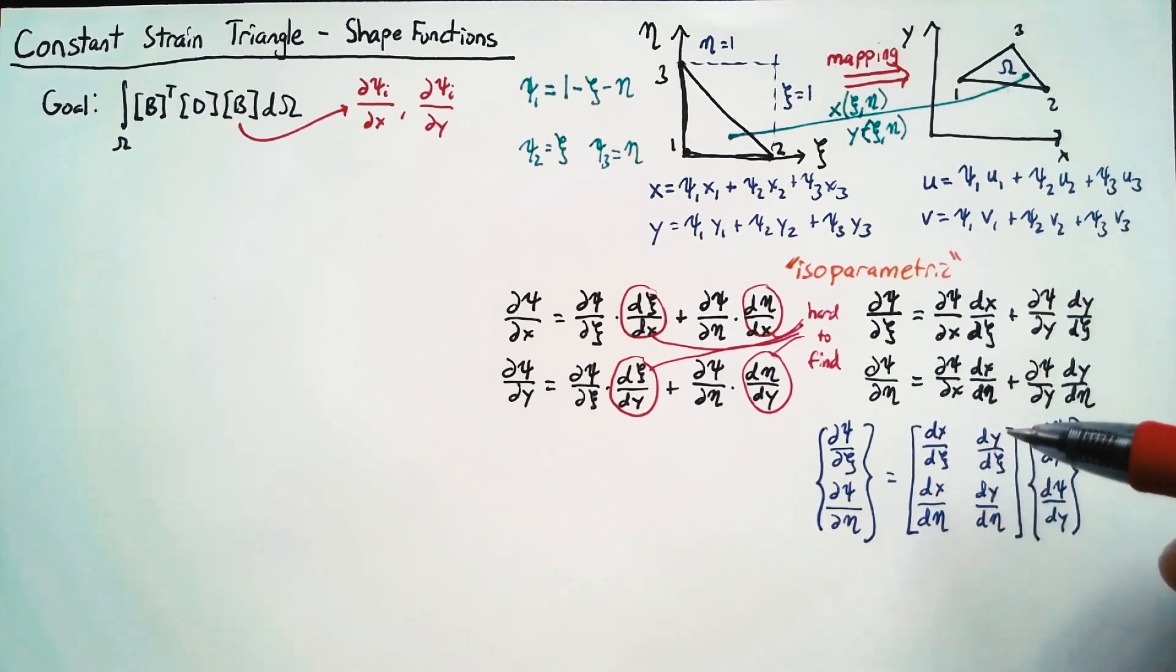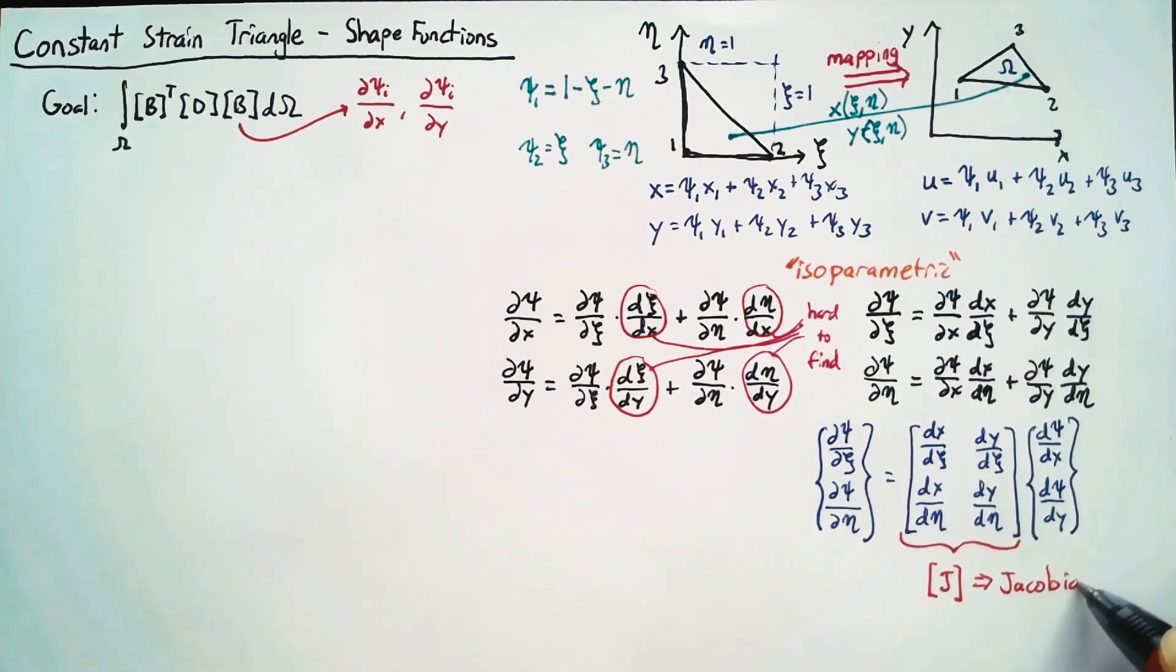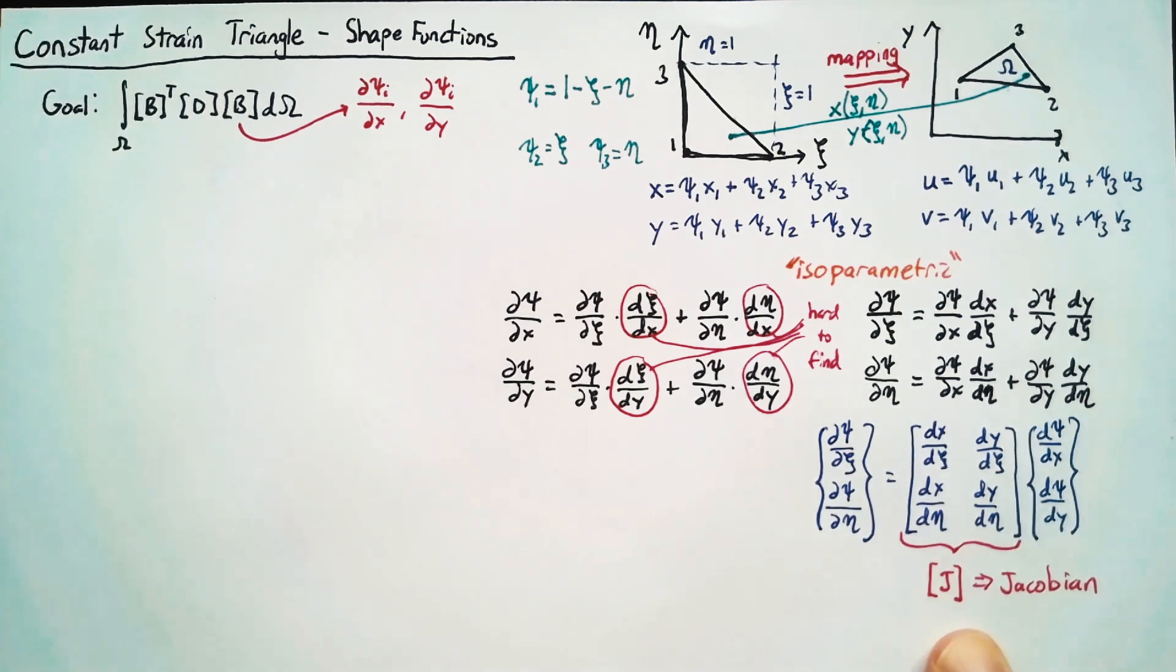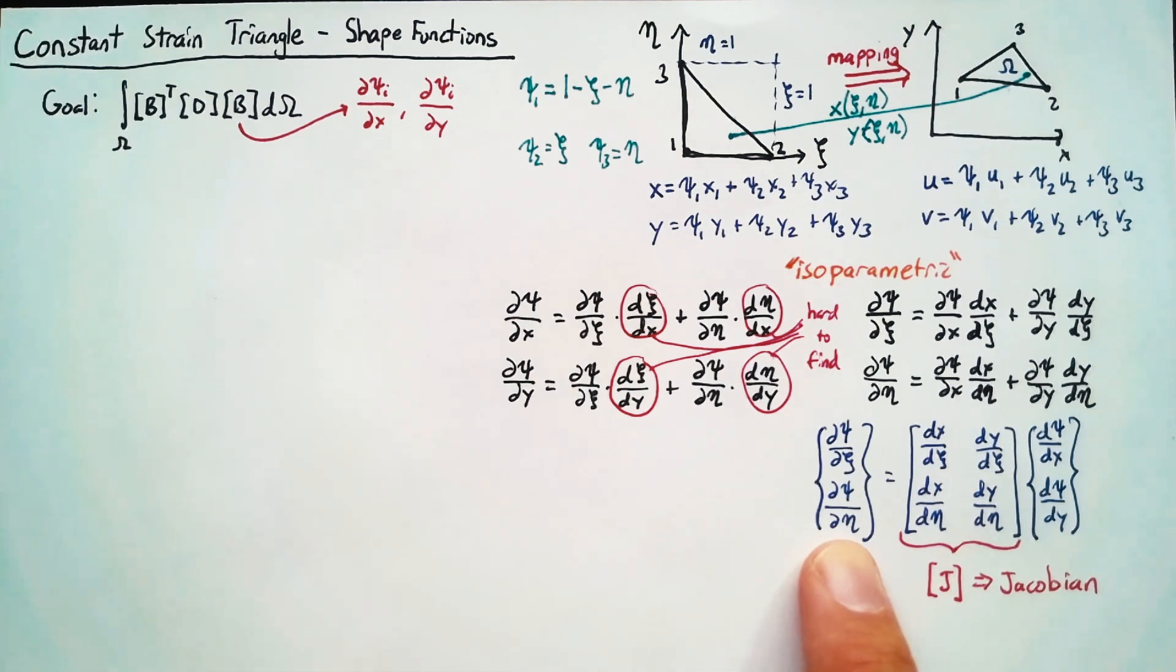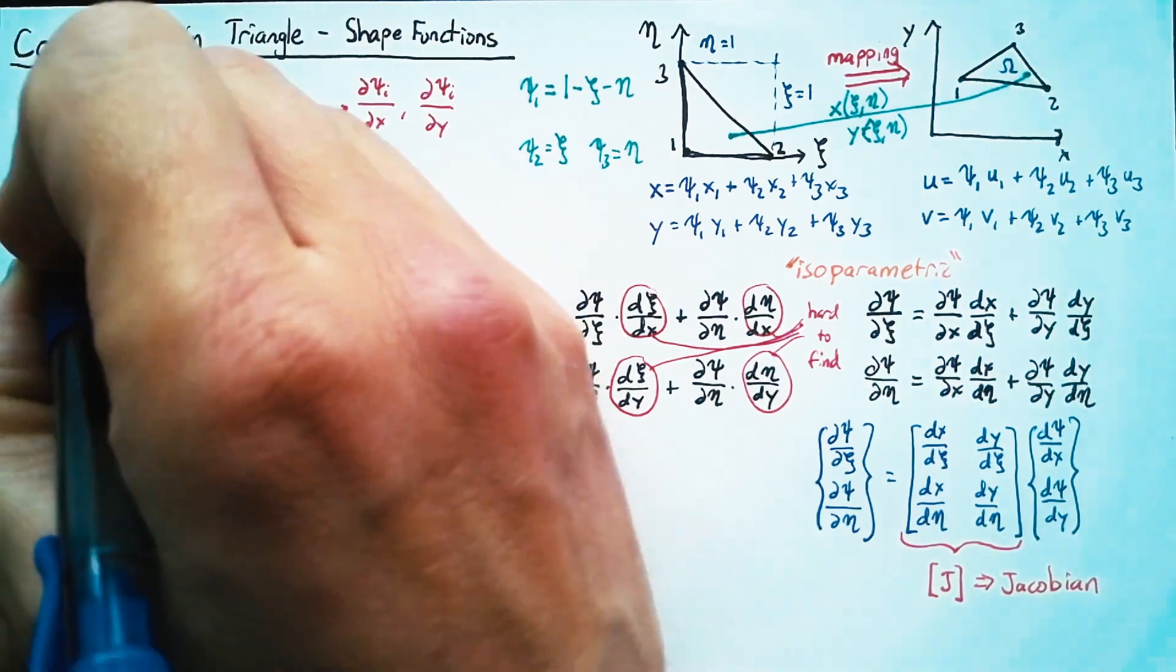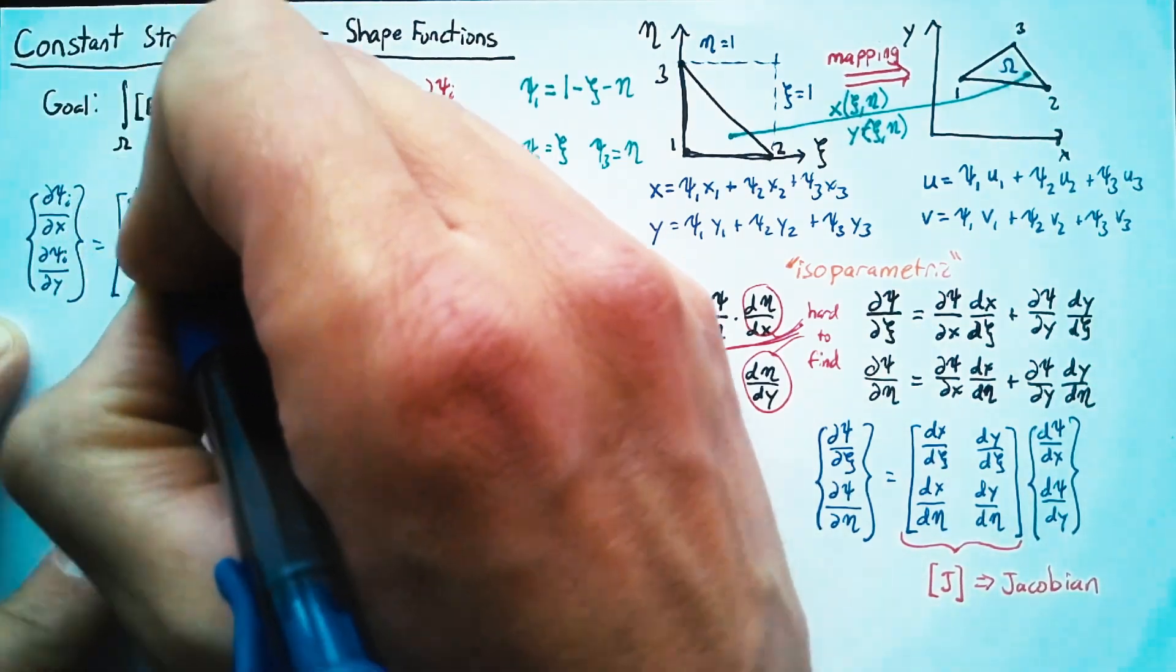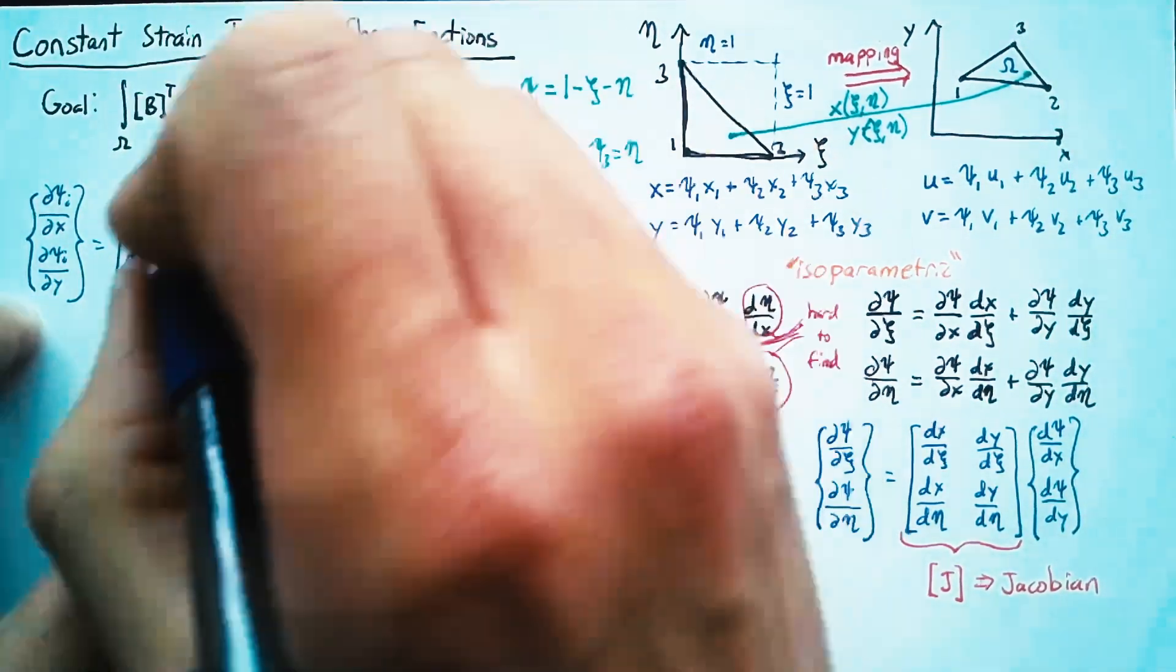Now, whenever we have a matrix that transforms from one space, one coordinate system into another, that matrix has a special name. And it's known as the Jacobian. And so what we're going to do is we are going to invert this Jacobian and multiply it by these known values. And that will allow us, for each of our i's, to find dPsi/dx and dPsi/dy.